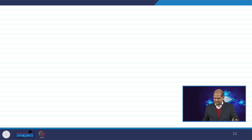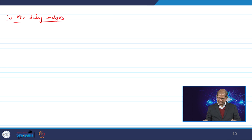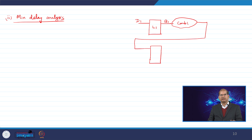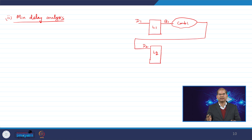Now we move to minimum delay analysis — hold violation analysis — for a pulse latch system. We have latch L1 with input d1 and output q1, followed by combinational logic feeding latch L2. Since we are looking at the same timing edge for a hold violation, the two latches are drawn in the same column.